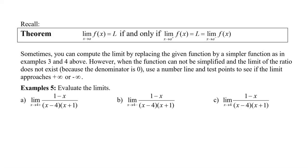In this video, we're going to take a look at limits when the denominator is zero, and also limits of piecewise functions. To recall, a limit will exist as x approaches a and equal L only if the right-hand limit and the left-hand limit both exist. Sometimes you can compute the limit by replacing the function with a simpler one — just putting in a number. However, when the function cannot be simplified and the denominator is zero, we can use a number line and test points to see if the limit approaches positive infinity or negative infinity.